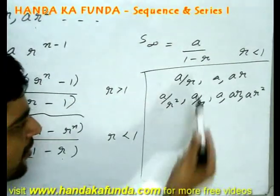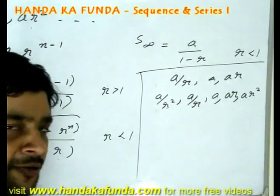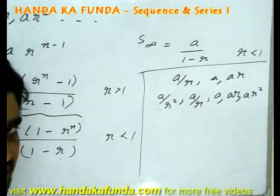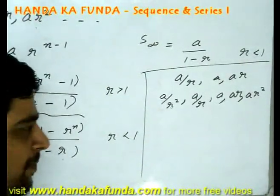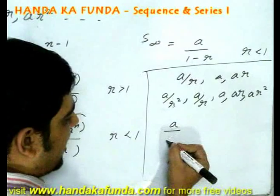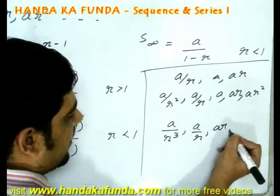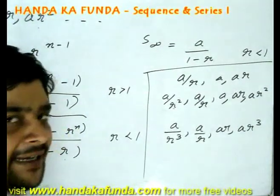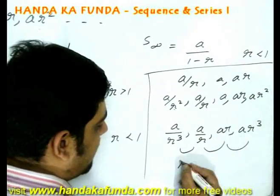Why am I doing them like this? Because the product in this case is a cube, the product in this case is a to the power 5. All the r and all powers of r cancel out with each other. Very similar to AP, if I have to assume four terms in a GP, they will be a by r cube, a by r, ar, and ar cube. As the common difference in that case becomes 2d, the common ratio in this particular case becomes r square.